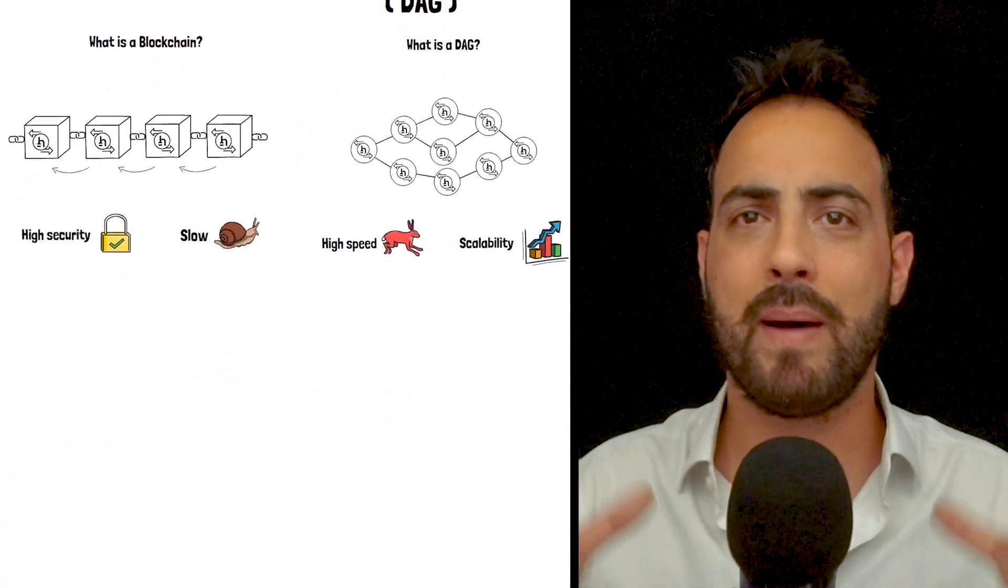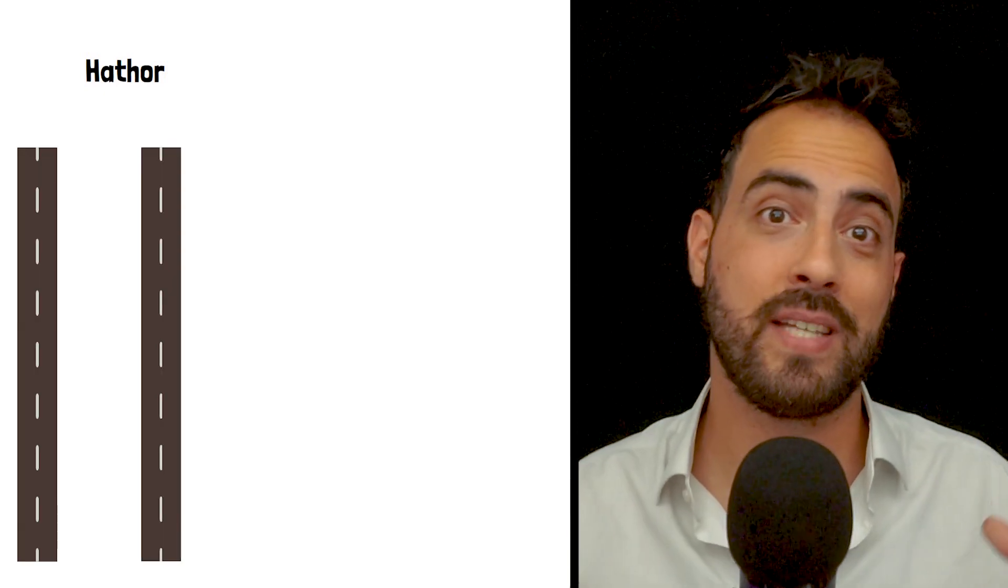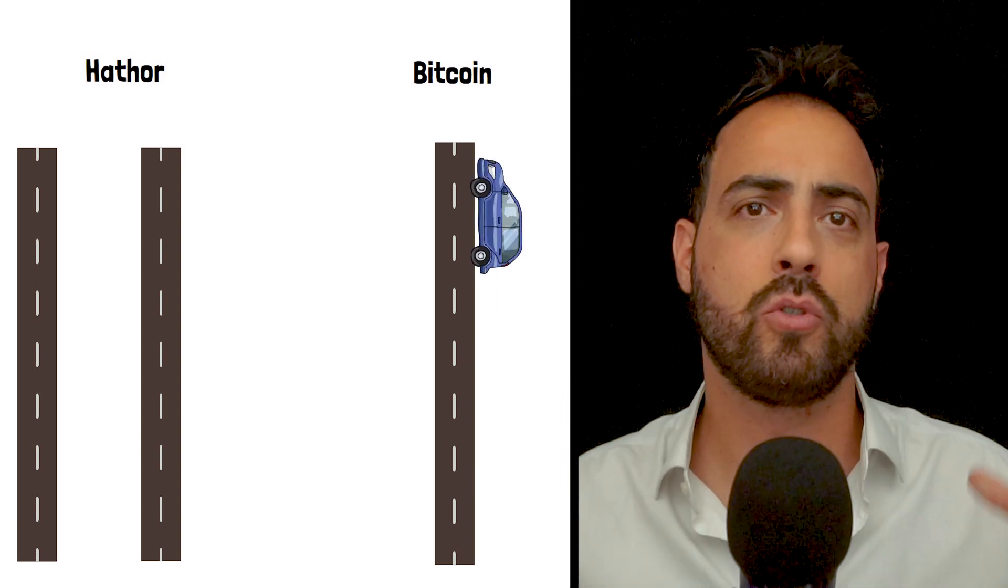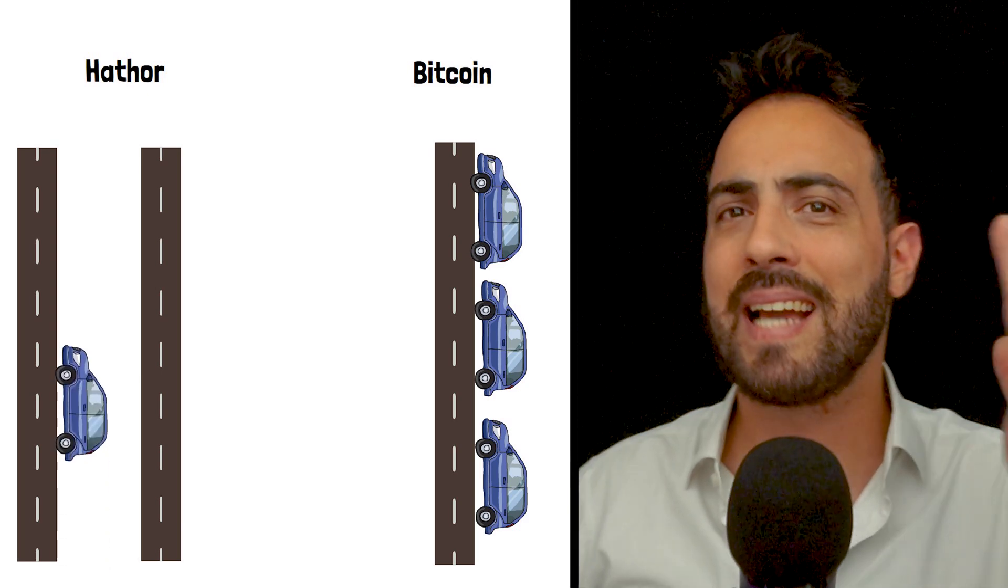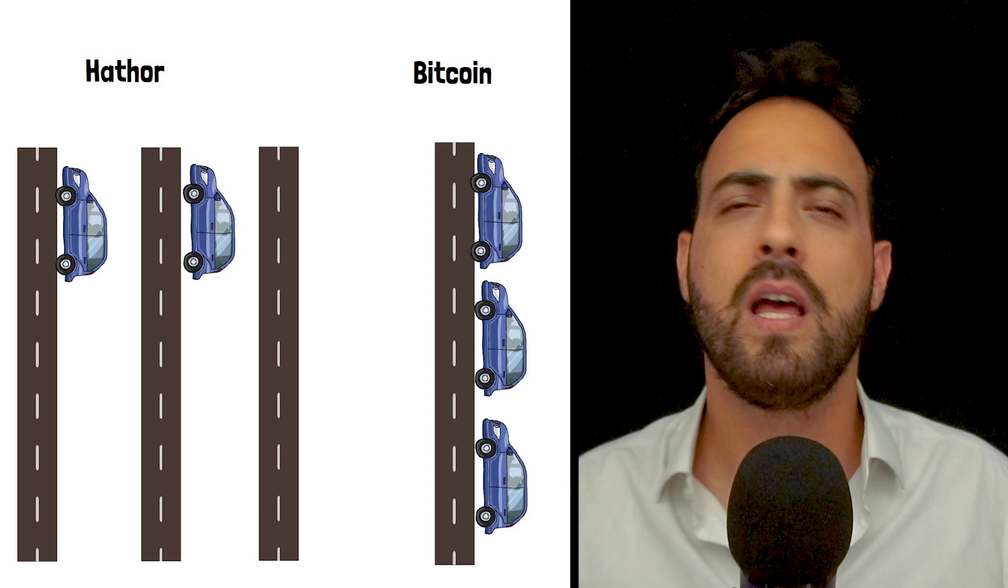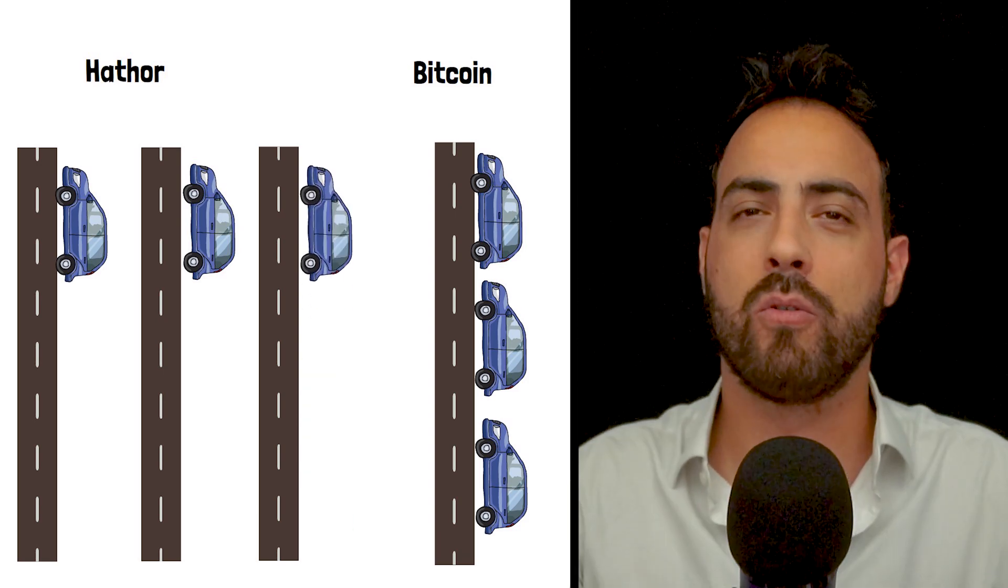To give a quick analogy, imagine Hathor as a super-efficient highway system. Traditional blockchains like Bitcoin are like a one-lane road. They can only handle so much traffic before things start to slow down. Hathor, on the other hand, is like a highway that can automatically add new lanes when traffic increases. This flexibility allows you to handle way more transactions without slowing down.